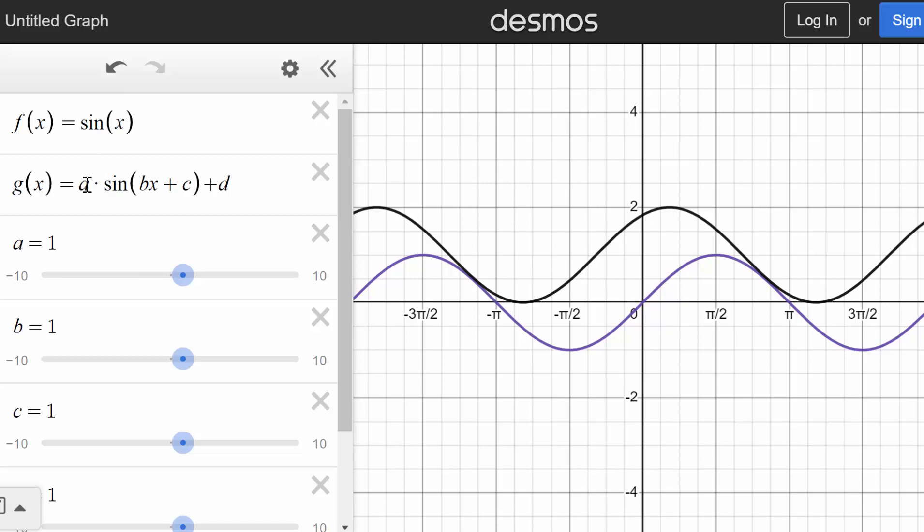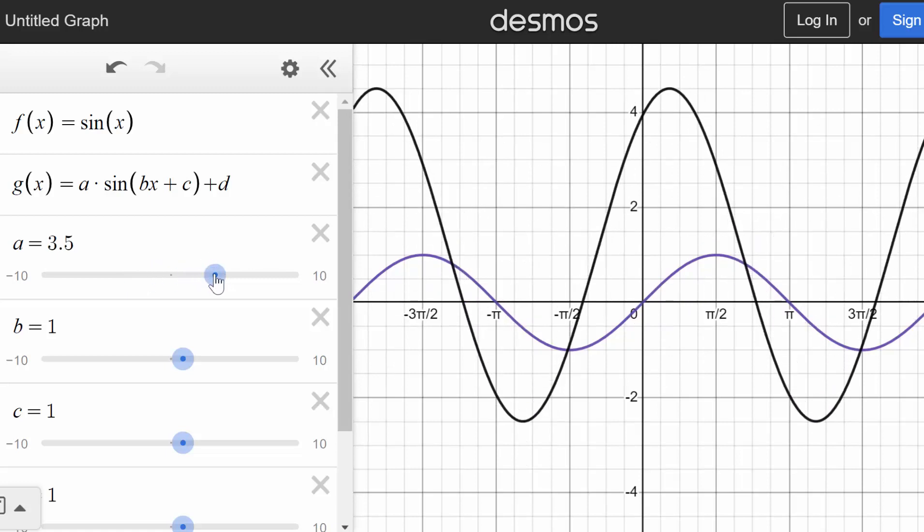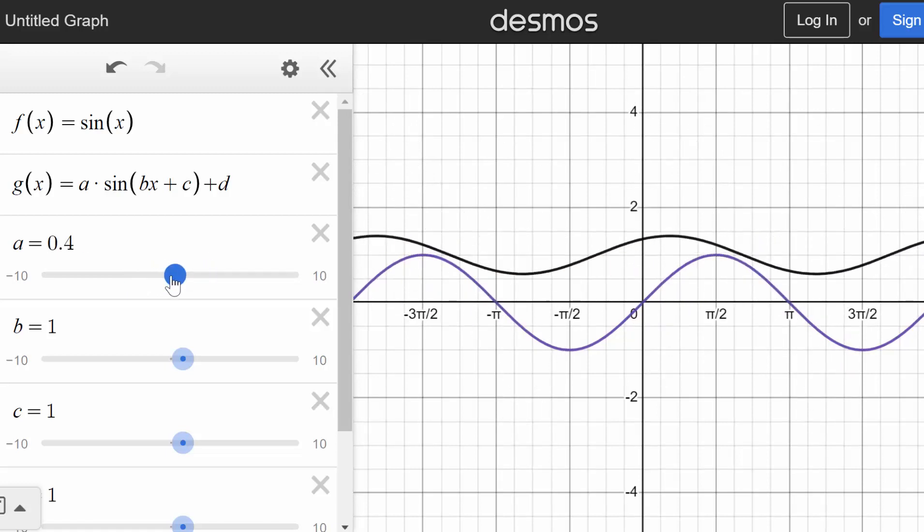Remember, the number we are multiplying by causes vertical stretching. And this number we call the amplitude. The bigger the value of a, we can see the higher the amplitude. But in our parent function, a is equal to 1.